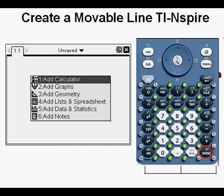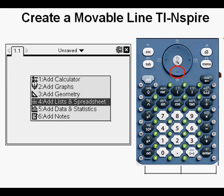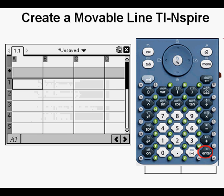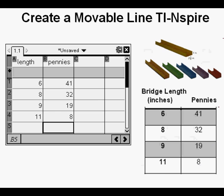We're going to go down to option 4, ADD LISTS AND SPREADSHEETS. Press ENTER. We now see the spreadsheet waiting to be populated. We enter the data from the table.